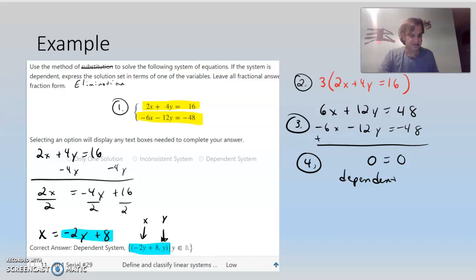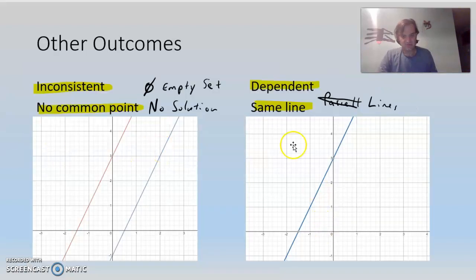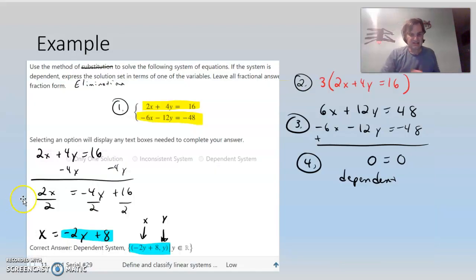So we could pick, basically if we go back to a graph, we could pick any Y value we want here. And use the equation to calculate the X that goes with it. Because we're looking at the same line on top of each other. Okay. So let's work with that and try some practice.